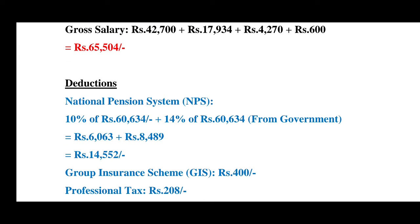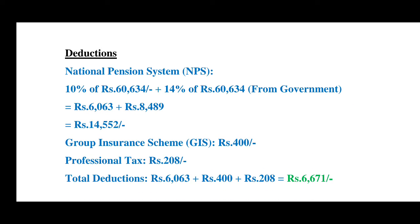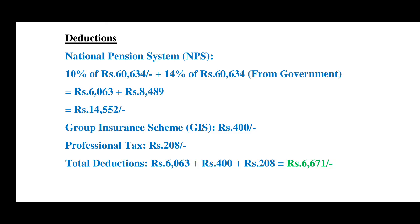So the NPS deduction from the employee's salary is ₹6,063. Additionally, Group Insurance Scheme is ₹400, and Professional Tax is ₹208. Therefore, the total deduction from the employee's salary is ₹6,063 plus ₹400 plus ₹208, equaling ₹6,671.